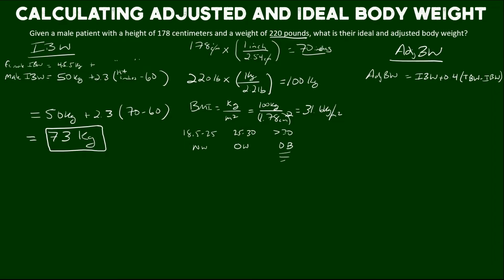And we need to do some sort of adjustment because they're just nowhere close to the ideal body weight. Therefore, we could be underdosing them or potentially incorrectly calculating something like a renal clearance if we don't use an adjusted body weight.